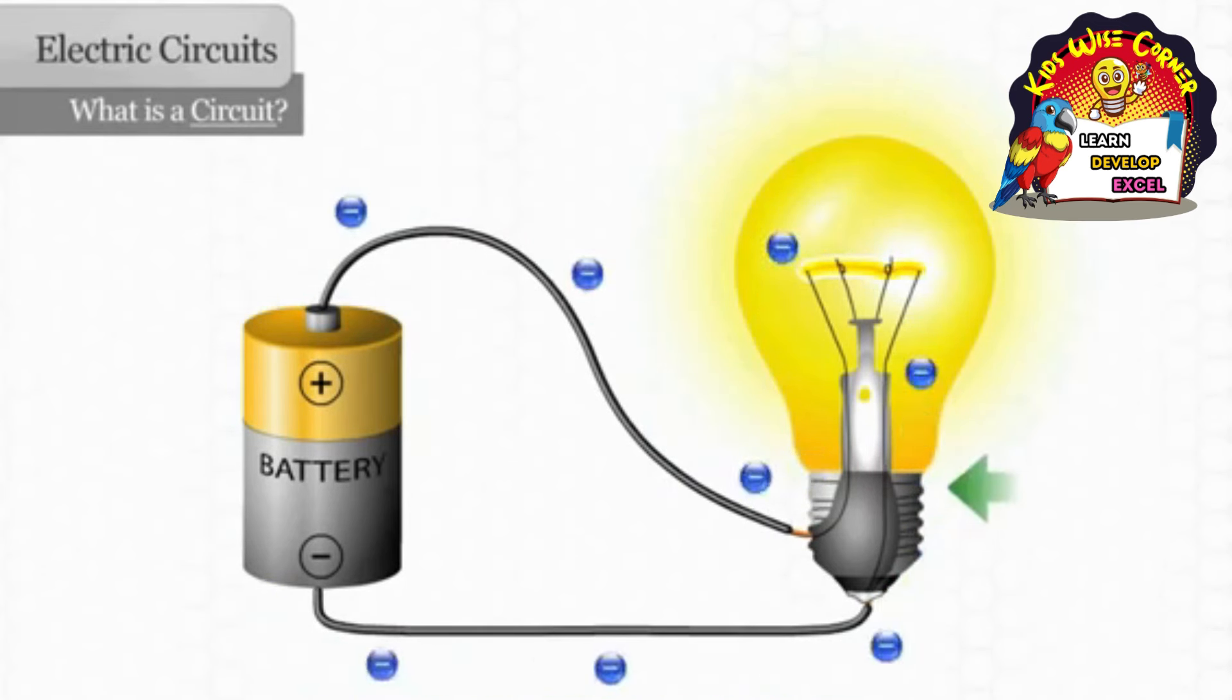From there, the electrons flow up a wire that is inside the bulb and across the filament, which is the part of the bulb that actually lights.